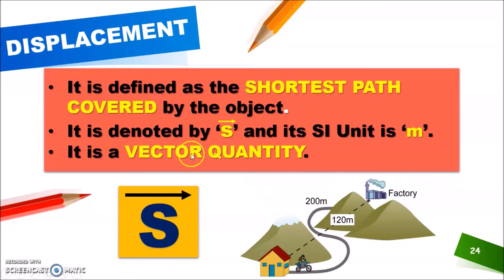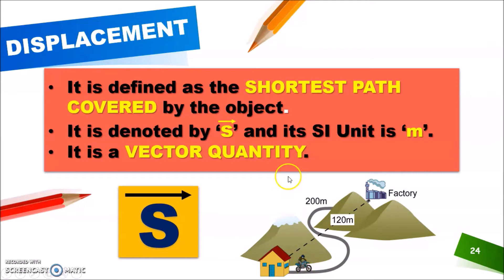Now next is displacement. It is the shortest path covered by the object. Now if this bike rider wants to go from his home to the factory directly, this distance is 120 meters. So basically it is a shortcut. This shortest path covered by this bike rider is called displacement — it is also called the shortcut taken by the bike rider.